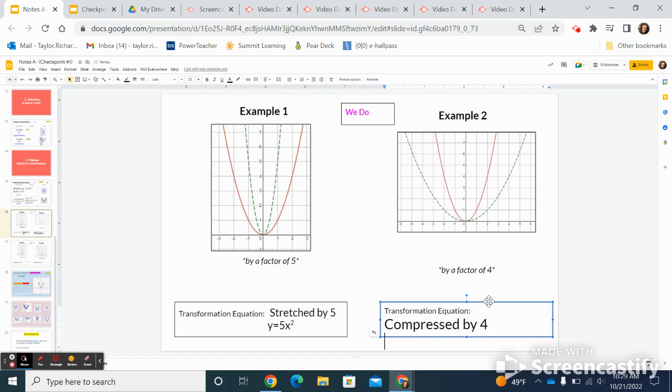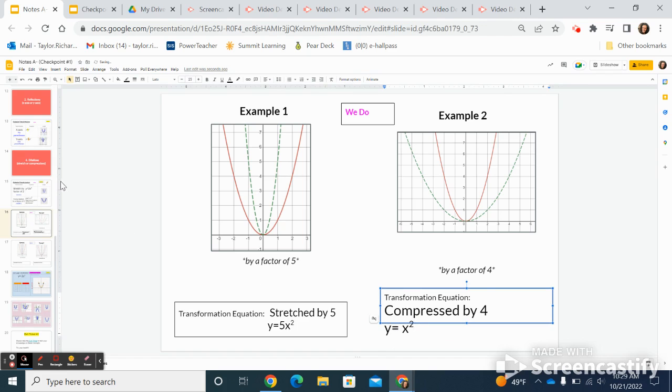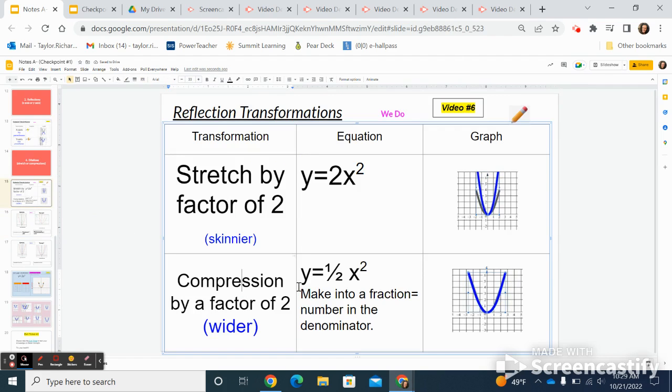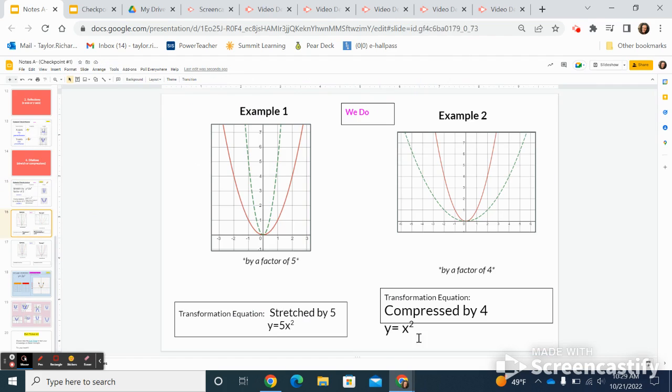And so my equation, again, I'm going to start with y equals x squared. And let's go back to see whenever I'm doing compression, I make it into a fraction, but that number goes down low. So it's going to be one over four. Oops, not two, four. And that's my equation for compression, one fourth x squared.